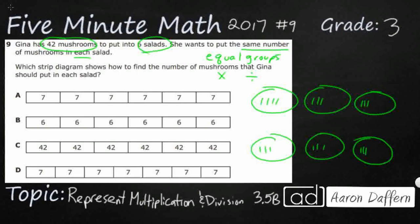Continuing on: 3 times 6 is going to be 18. I'm up to 24 now, and then 25 through 30 — so that's always good to know. I've got 5 sets of 6, and that's going to be 30. And I still have some left.